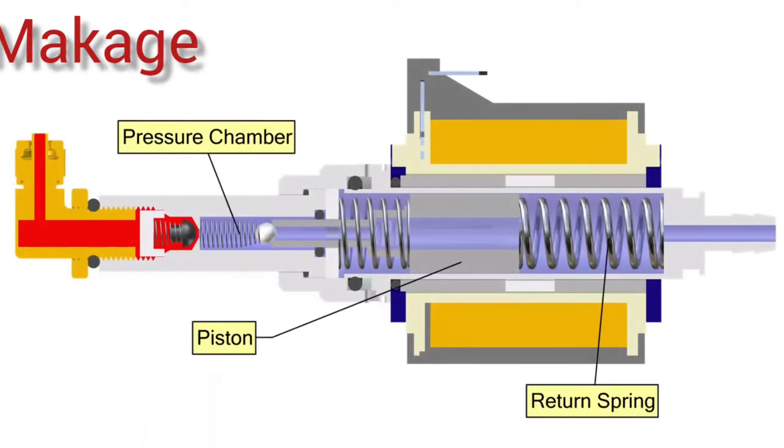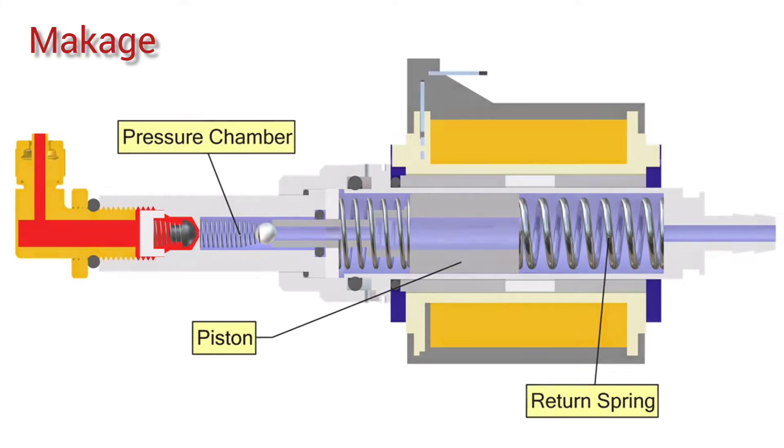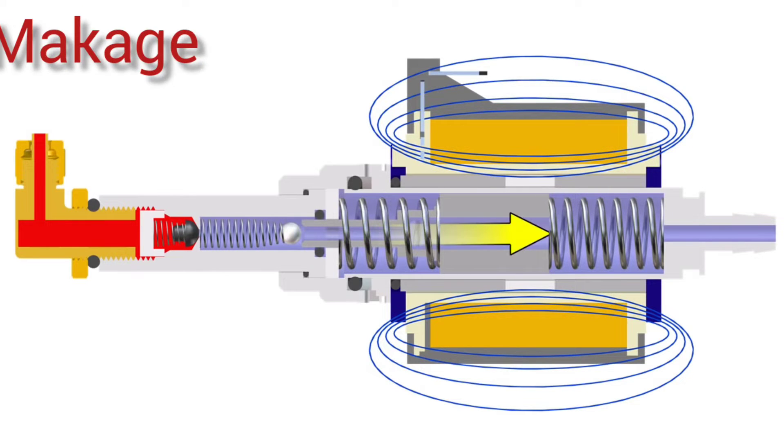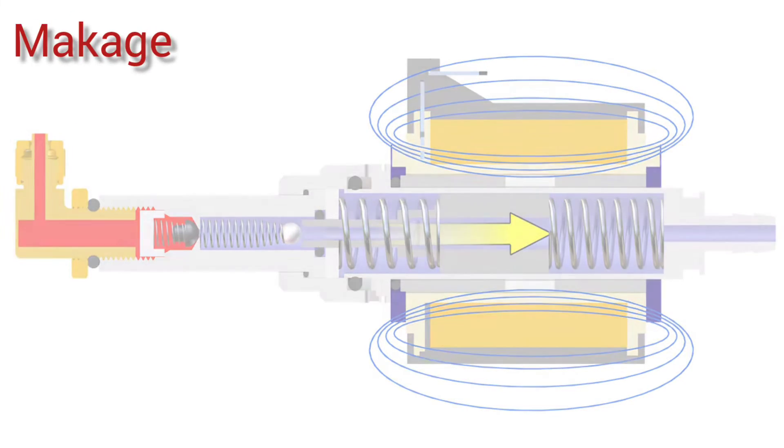Here's a section view of the pump in the relaxed position. When AC power is applied, the magnetic field created moves the piston to the rear during the positive half of the voltage cycle. When this happens, water is able to flow into the pressure chamber.